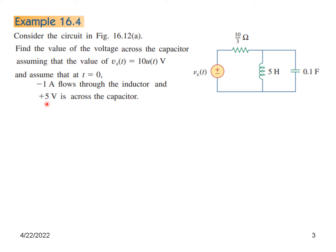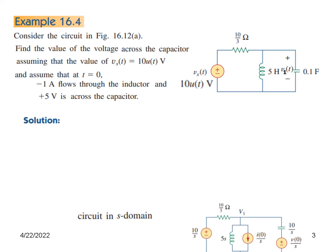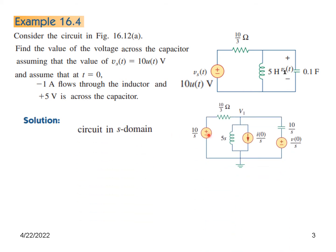The initial voltage across the capacitor is V(0) equals plus 5V. We need to find V1(t), the voltage across the capacitor. We convert to the S-domain: 10u(t) transforms to 10 over S.